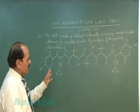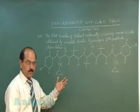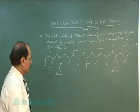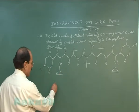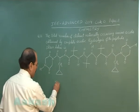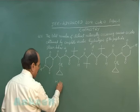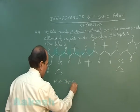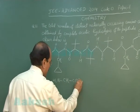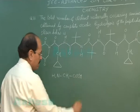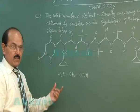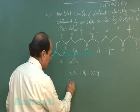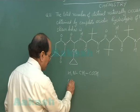On acidic hydrolysis we get 3 amino acids. One of them is glycine, and glycine is naturally occurring.